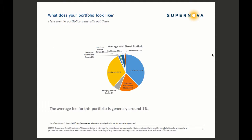Let's look at some of the common portfolios out there. This is from a Barron's Penta study in March of 2016. What we can see is that U.S. stocks and U.S. bonds accounted for about 70% of the portfolio, developed international stocks another 18%, and not a lot in the rest of the asset classes. The odds are that this is what your portfolio generally looks like. Most advisors are charging around 1% for the same portfolio.